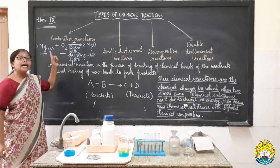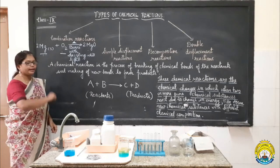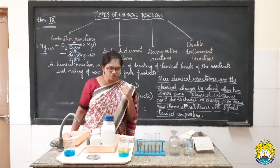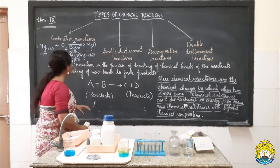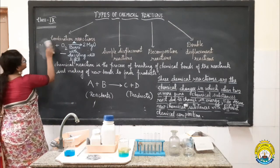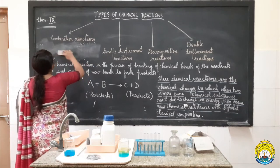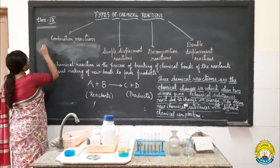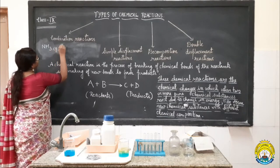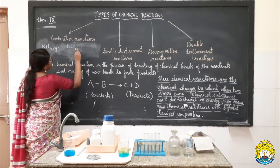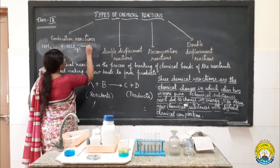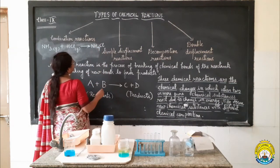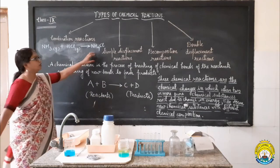This type of reaction can also be observed when sometimes two compounds react under different conditions of temperature and pressure to form a new complex compound. We can have a combination reaction of this type where a compound ammonia can very well react with a compound HCl to produce ammonium chloride. Fumes of ammonium chloride will be formed.